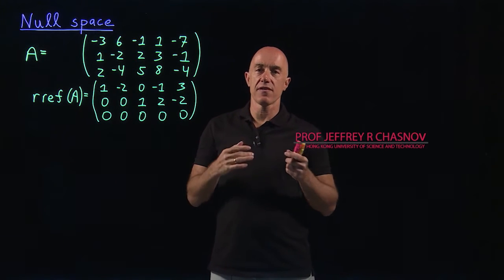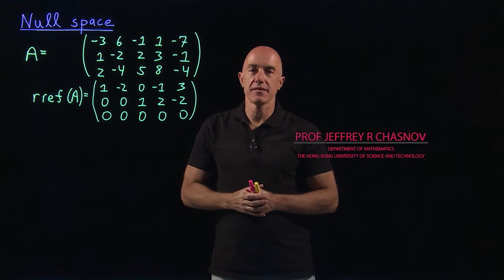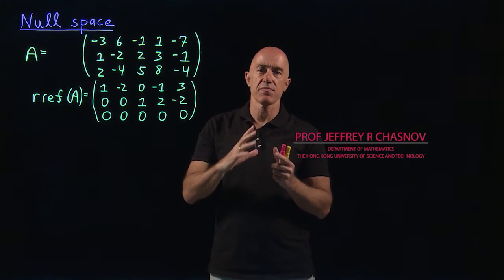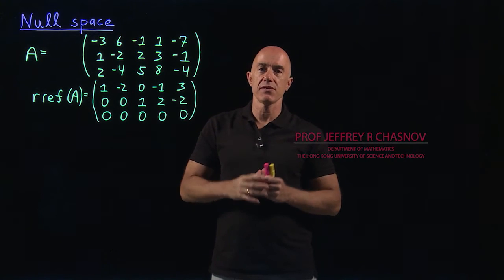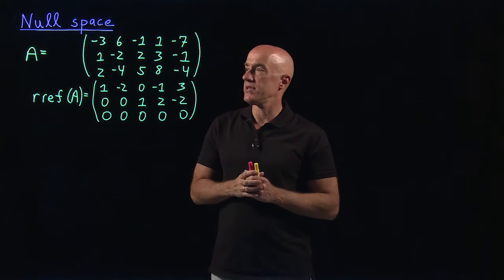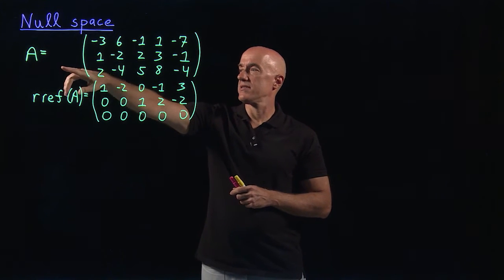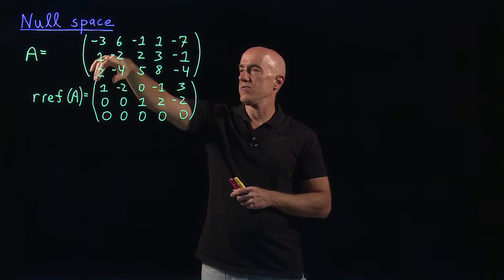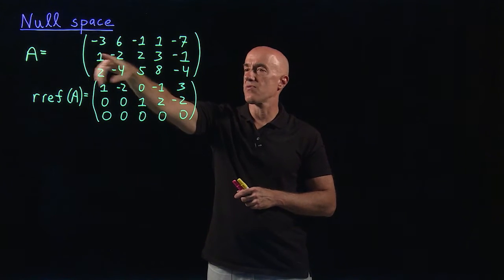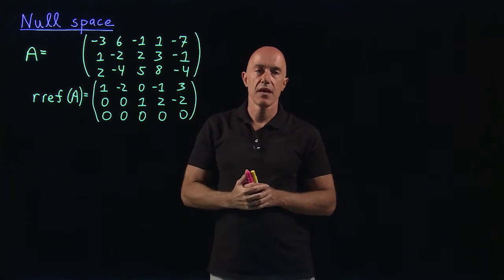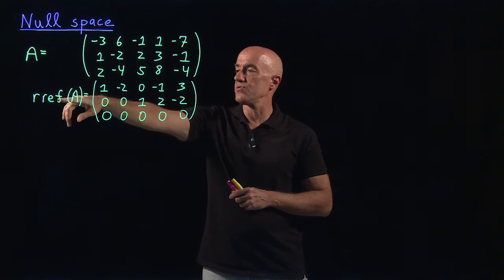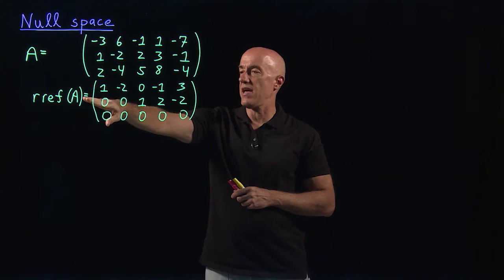We've defined what a vector space is, so it's time to now talk about vector spaces associated with matrices. We're going to work an example into today's video. We're going to consider a matrix A, which has three rows and five columns — a three by five matrix. We can do the calculation to find the reduced row echelon form of A.